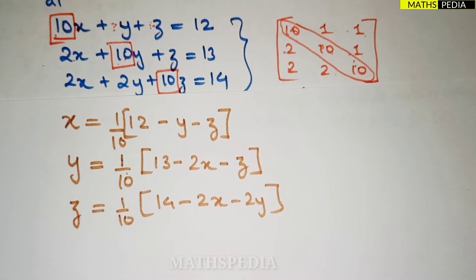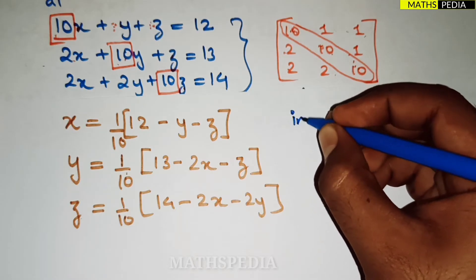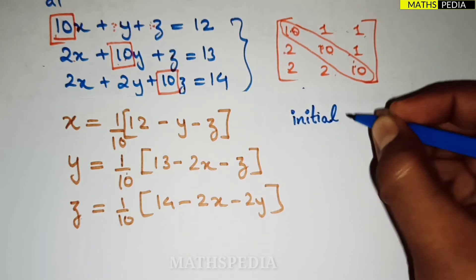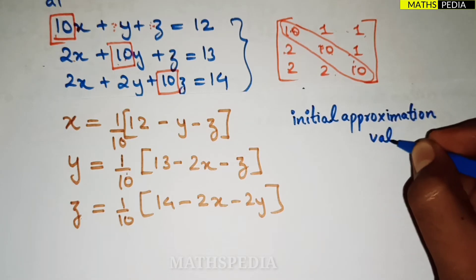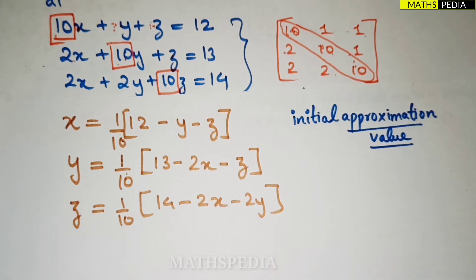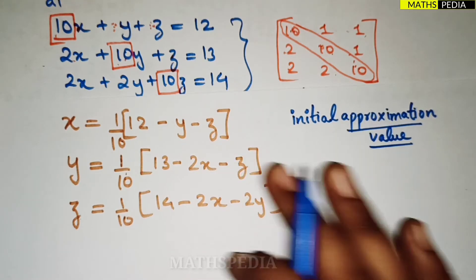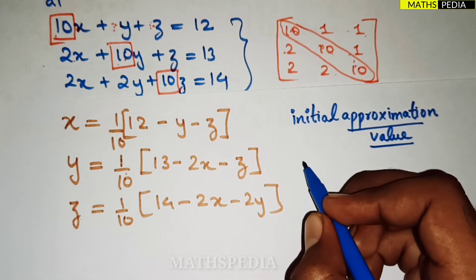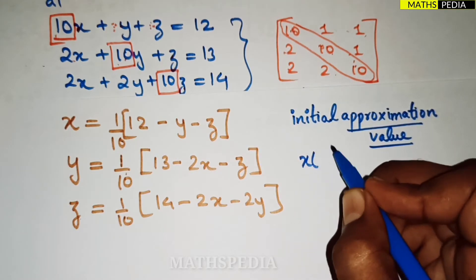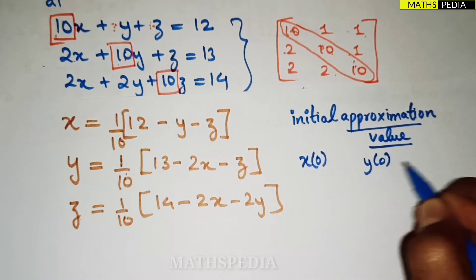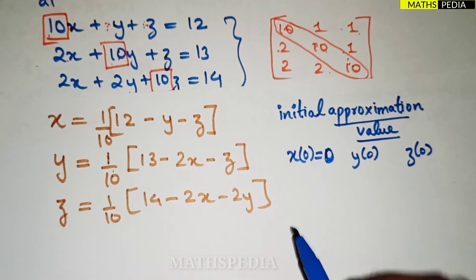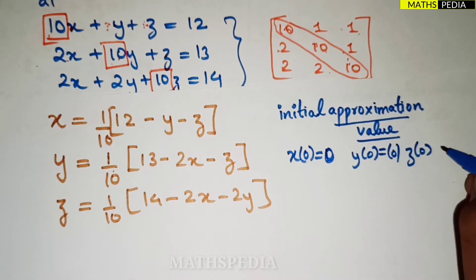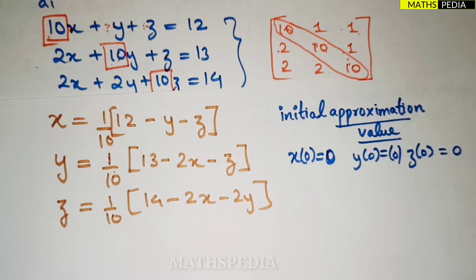Next, for the first iteration we need to consider initial approximation values. Sometimes the question itself will give you these values and specify how many iterations to perform. For this question, we consider the initial values x(0) = 0, y(0) = 0, z(0) = 0. You can consider any values like 1, 2, 3 — it doesn't matter, at last you will arrive at the same solution.